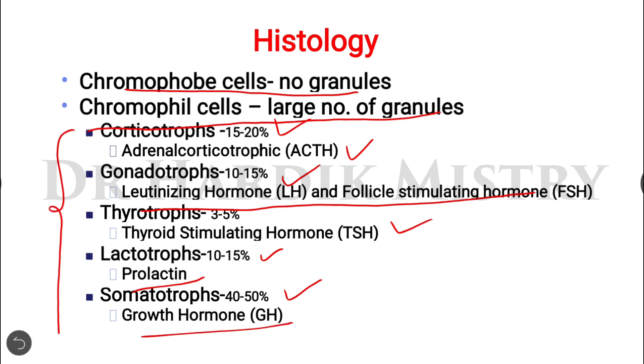Lactotropes comprise 10–15% of cells and secrete prolactin. Somatotropes comprise 40–50% of cells and secrete growth hormone. All of these are the different types of chromophil cells present in the anterior pituitary gland.